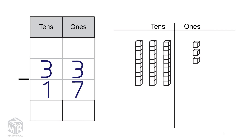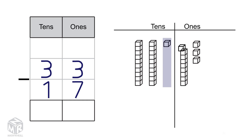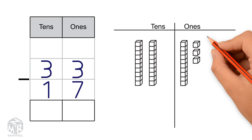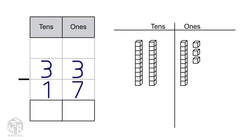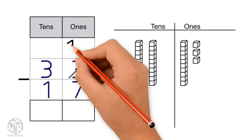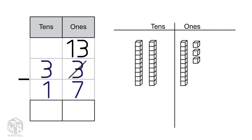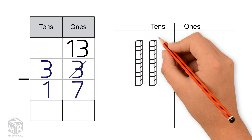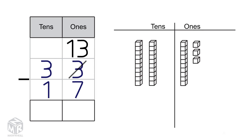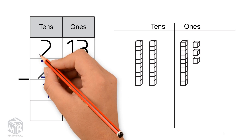33 has three 10s and three 1s. We can't subtract 7 from 3, so we regroup one 10 as 10 1s. Now we have 13 1s. We cross out the 3 and write 13 at the top. We also have two 10s, so we cross out 3 and put 2 at the top.